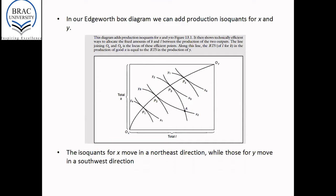Starting from the origin OX, we see various production isoquants for X, X1, X2, X3, and X4. Similarly, if you look at the origin of Y, OY, we have production isoquants for Y.